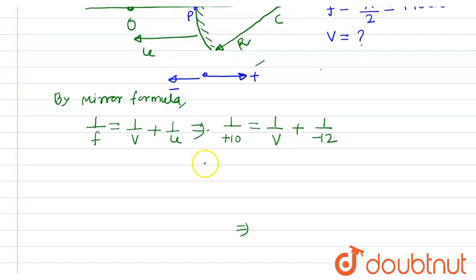Therefore, 1 upon v equals to 1 upon 10 plus 1 upon 12, and hence 1 upon v equals to... 10, 12, 60... 6 plus 5.